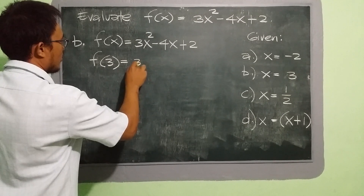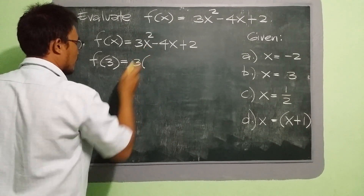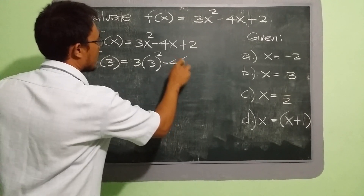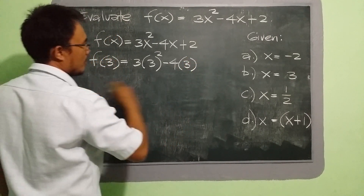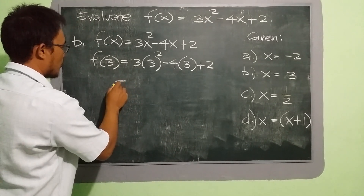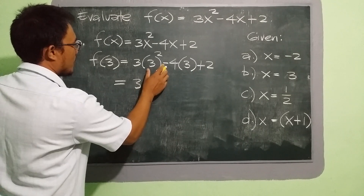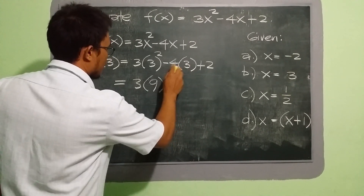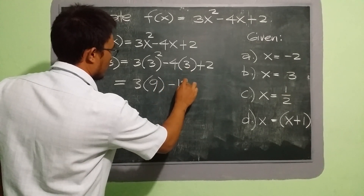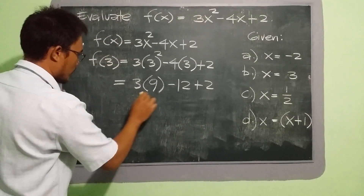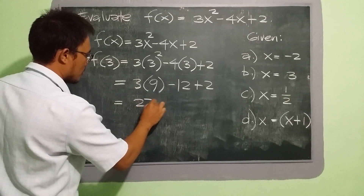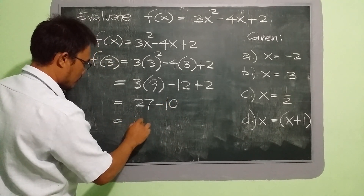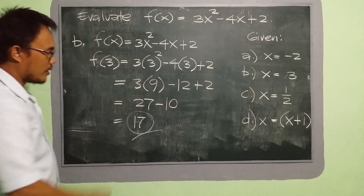So that is equivalent to 3 times the value of x, which is 3, squared — don't forget the exponent — then minus 4 times the value of x, which is 3, and then plus 2. We have 3 squared is 3 times 3, that is 9. And we have negative 4 times 3, since negative 4 is negative, we have negative 12 plus 2. Then 3 times 9 is 27. Negative 12 plus 2 is negative 10. So 27 minus 10 is 17. Our answer for letter b is 17.